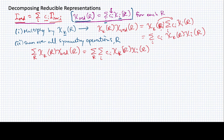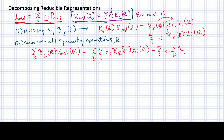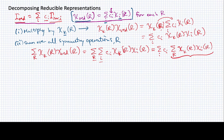Now this summation — it doesn't matter which order I do it in, since I'm summing over discrete points. So I can reverse the order and write this as sum over i of c sub i, then sum over r of chi sub k of r times chi sub i of r. The reason I've done this is that because irreducible representations are orthogonal to one another, if k does not equal i, this inner sum is going to vanish — so here again we see the benefits of orthogonality.